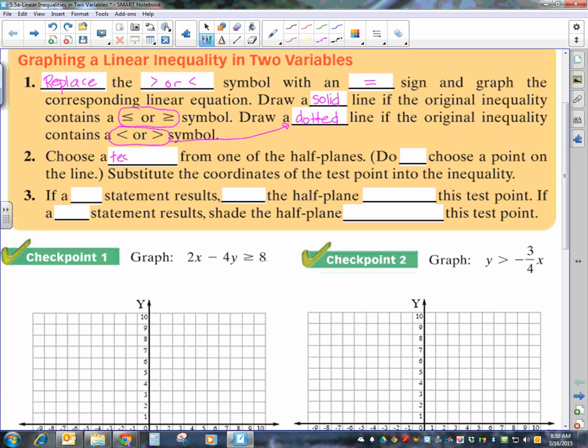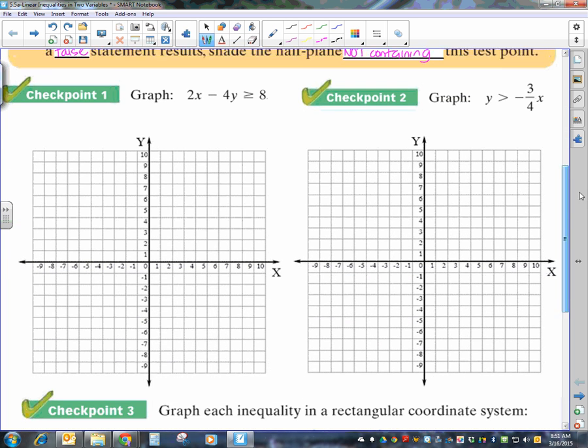Then, you want to choose a test point. Some books call it test value. Do not, whatever you do, choose a point on the line. That won't help you get the information you need. And you're going to substitute the coordinates of the test point into your inequality. And if you get a true statement, then you're going to shade the half plane that contains the test point. If you get a false statement, then you're going to shade the half plane not containing this test point. So, let's go do some and see how you do if you have any questions.